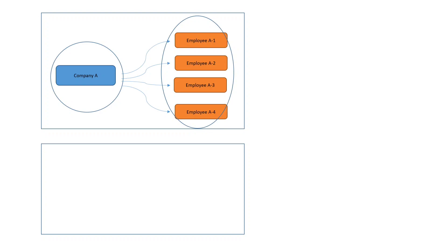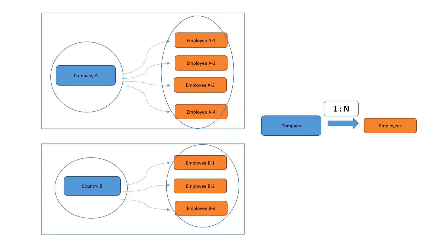Hello viewers, welcome to Charity of Tech channel. In our previous video we saw about one-to-end and end-to-one relationships, where we took an example of companies. There are multiple companies and in each company there are particular employees — every company can have a one-to-N relationship with employees, and similarly an employee belongs to one company.